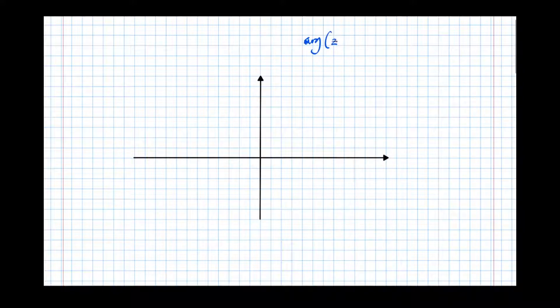Argument of z equals, let's say, pi over 4. So this is any complex number; what I want is the locus of all complex numbers that have an argument of pi over 4.